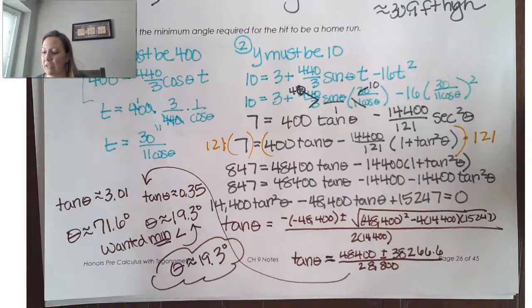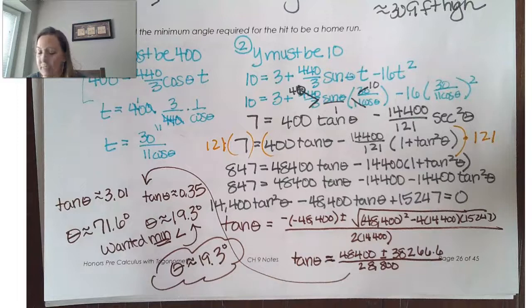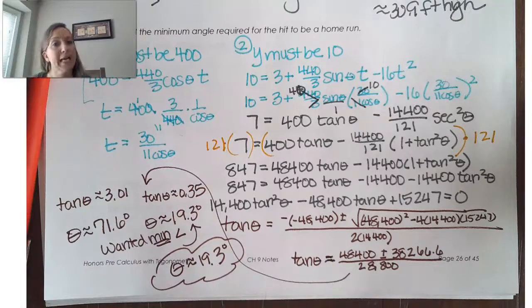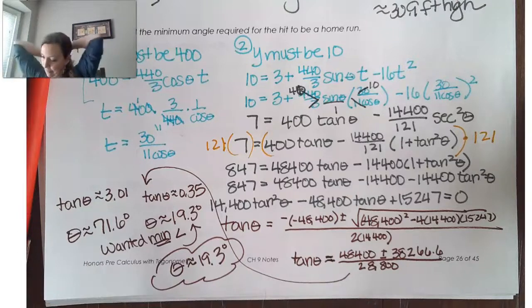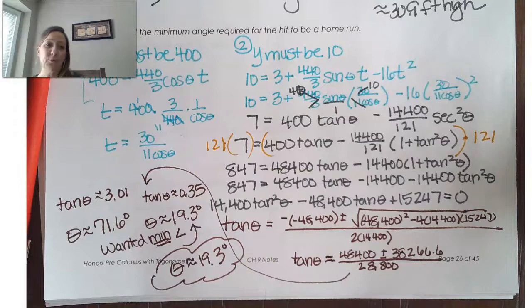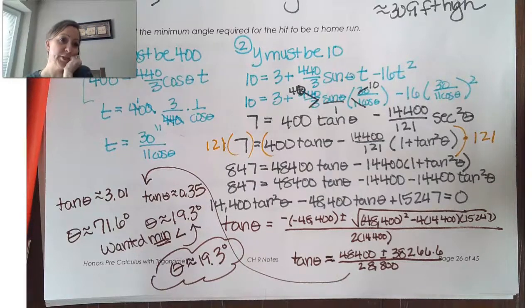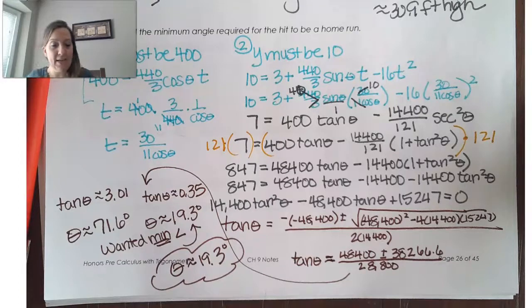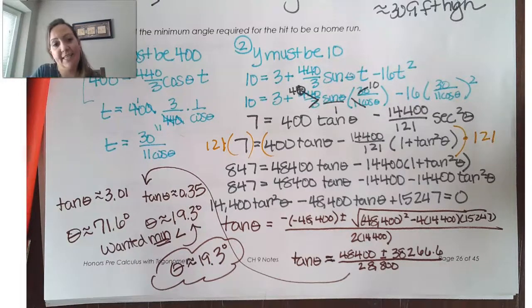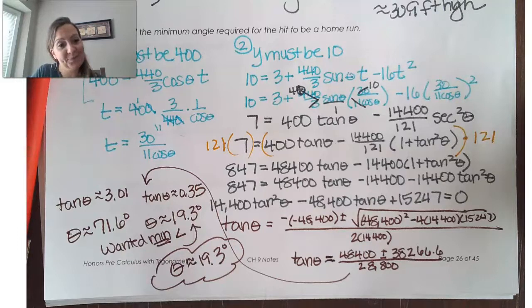And I think if you actually use the exact values, it might be something like 19.4. But, that's close enough. So, this is just a fun way that you can find the minimum angle to reach a home run. Because, I'm sure you might do that in your sleep. Anyway, so, that's it for that. Hopefully, you guys enjoyed that example. And, have a great day.